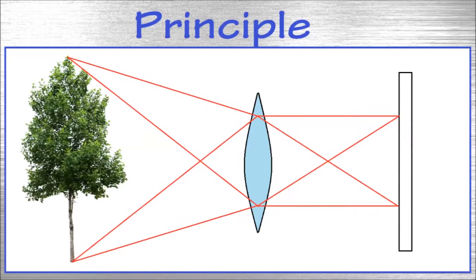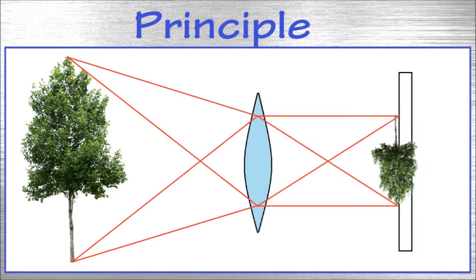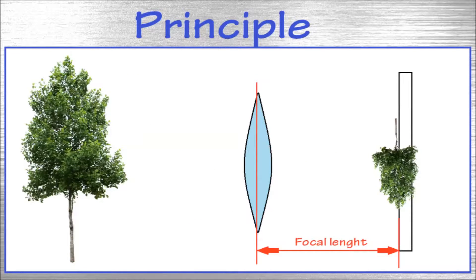The light from the image of the tree will pass through the lens. The lens will project the image on the surface but it will be upside down. Very important for getting a sharp image is to get the right distance from the surface to the lens. This is called the focal length.